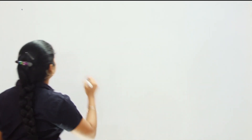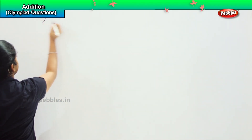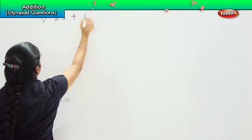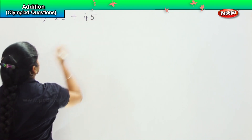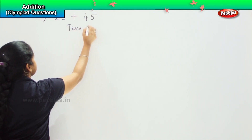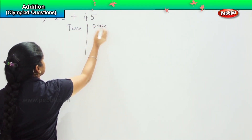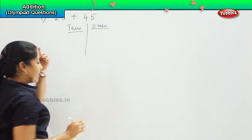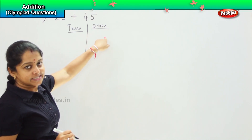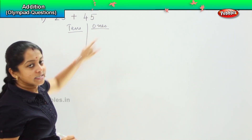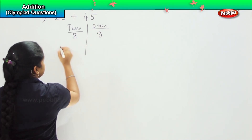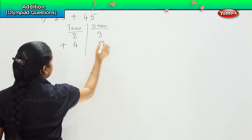Your first question is 23 plus 45. So, what is the first step, children? Tens and ones. You can also write tens and ones as T and O — it is not mandatory to write it completely. 23 is 2 tens, 3 ones. 45 is 4 tens, 5 ones.